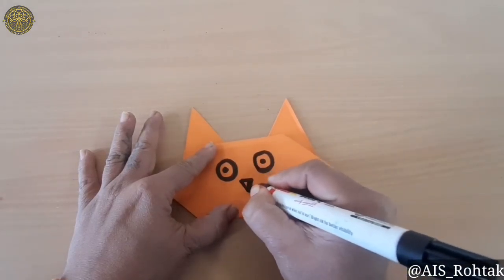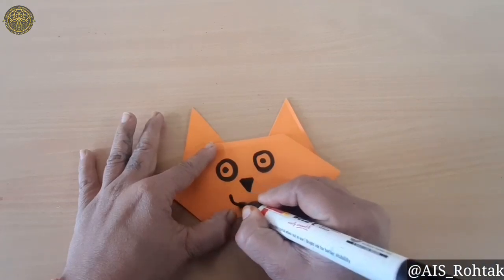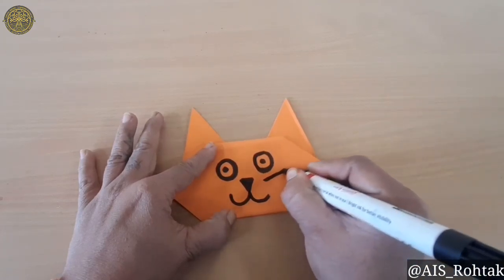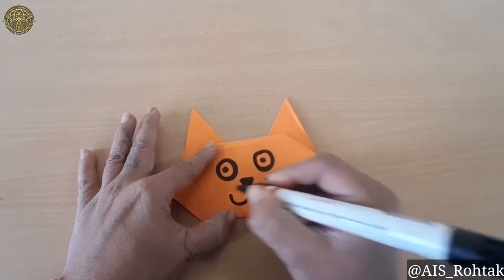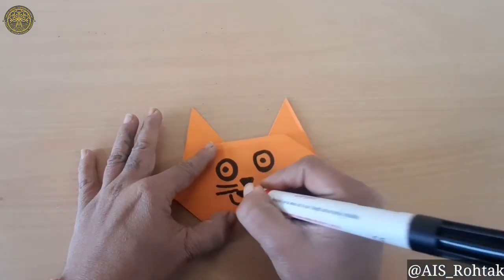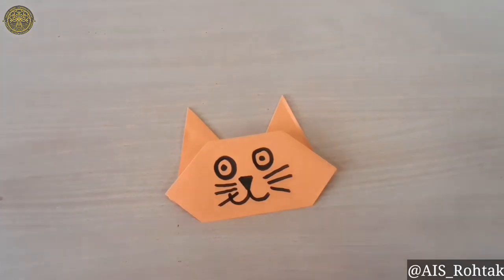Now draw one triangle for the nose and the W for the mouth. For the moustaches, just draw straight lines like this. Your origami cat is ready.